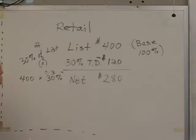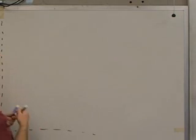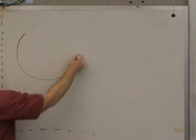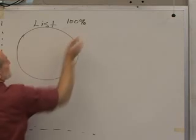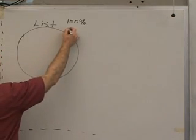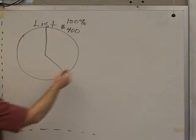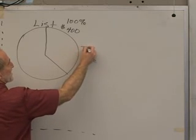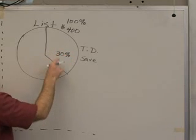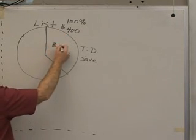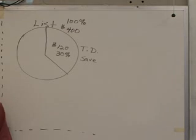Now, let's relate that a little bit to some of the PBR things that we did before. This is a situation where the list price is the whole thing. It's the 100%. If our list price is $400, there's a part of it that we're going to save. That's our trade discount. In this case, it was 30% that we would save. And 30% of $400 was $120. This is our trade discount amount. This is our trade discount rate.